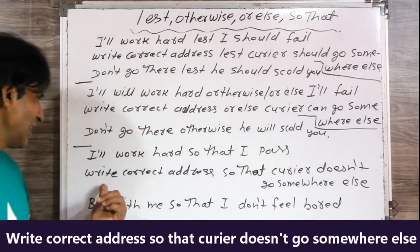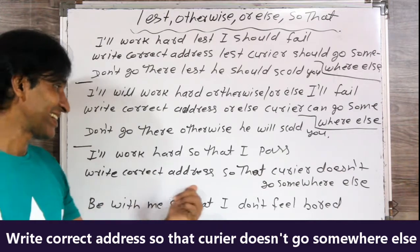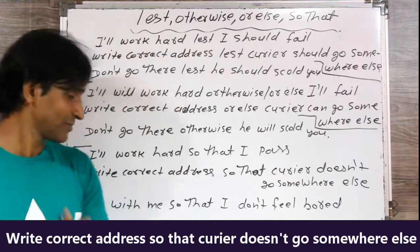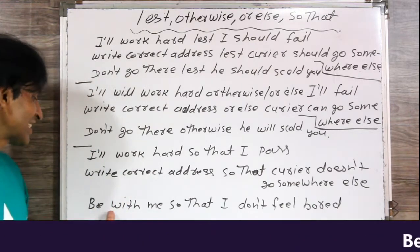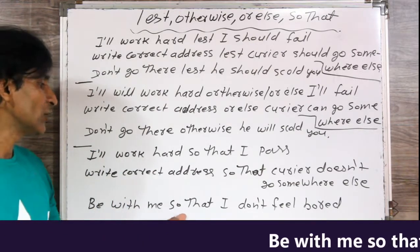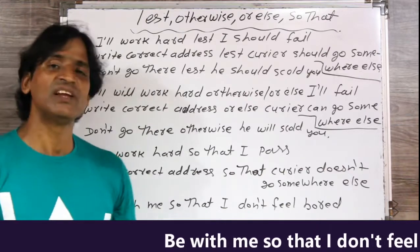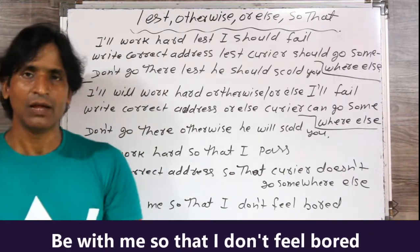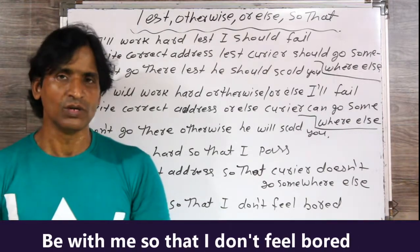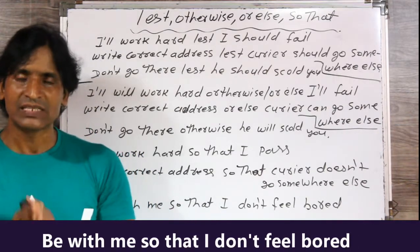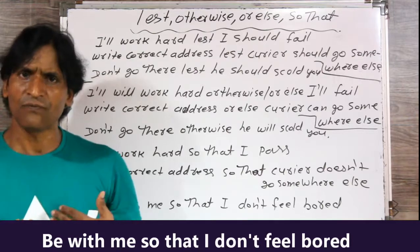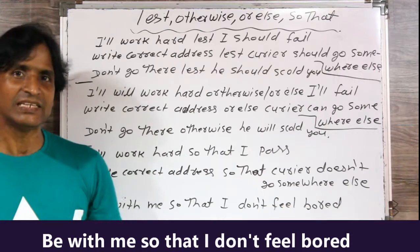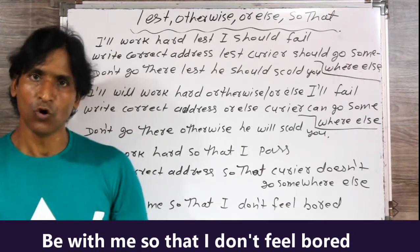Third sentence: 'Be with me so that I don't feel bored.' मेरे साथ रहो, ताकि मुझे बोर फील न हो. So, be with me so that I don't feel bored.